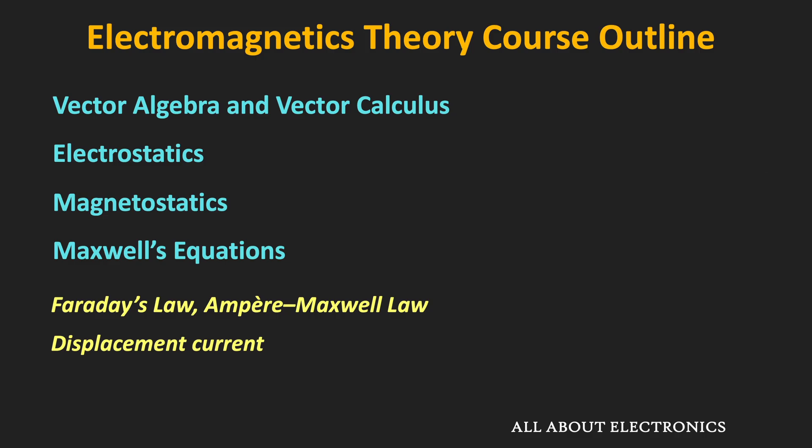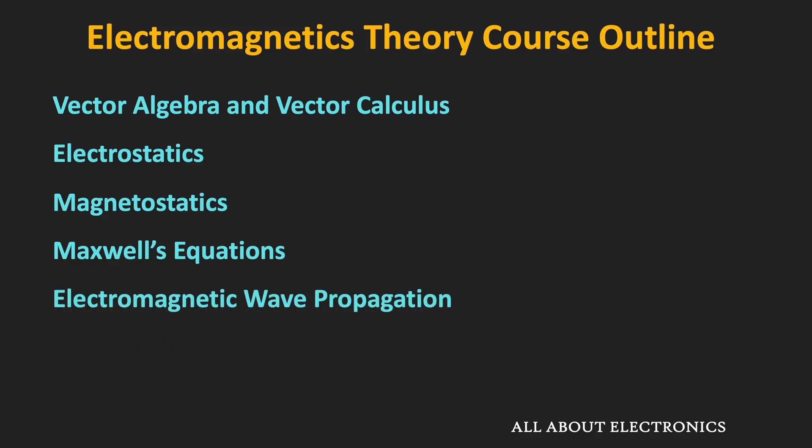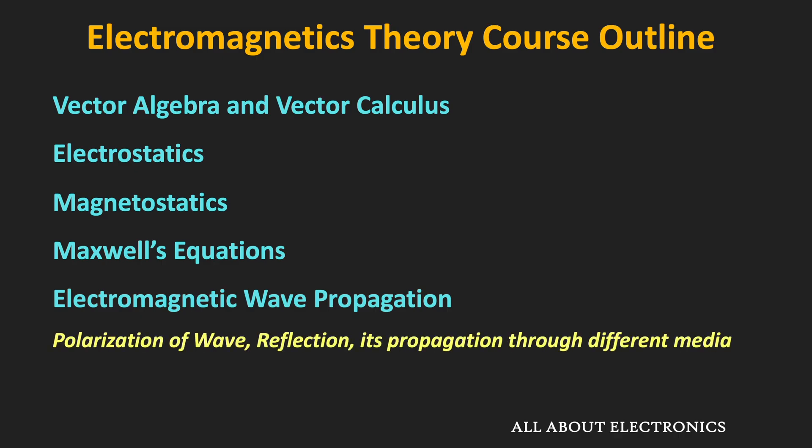Once we understand the Maxwell equations, we will study the properties of the electromagnetic wave. We will understand the concepts of polarization and reflection, and see how the electromagnetic wave propagates through different media. We will also understand the Poynting theorem and the Poynting vector, covering the different properties of the electromagnetic wave and its behavior in different media.